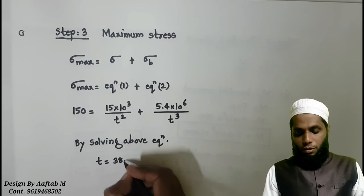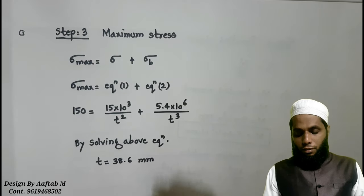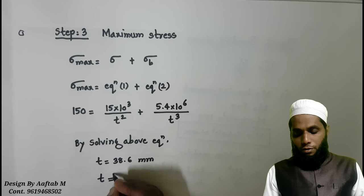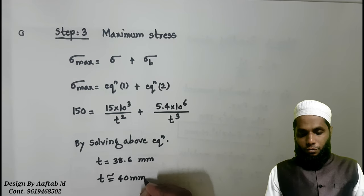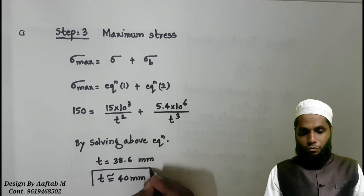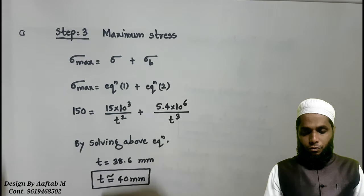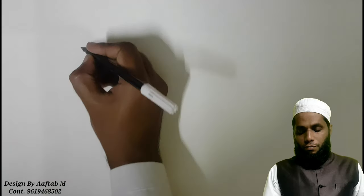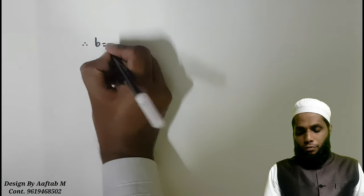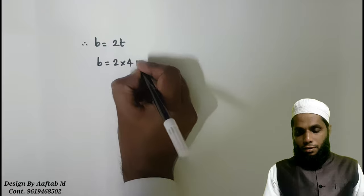Now, we will make it in round figure approximately. In design, we can make to even number. Next, even number that is approximately 40 mm. And finally, we will find what is the value of B, that is 2T. So, 2 into 40. And we got the answer as 80 mm.